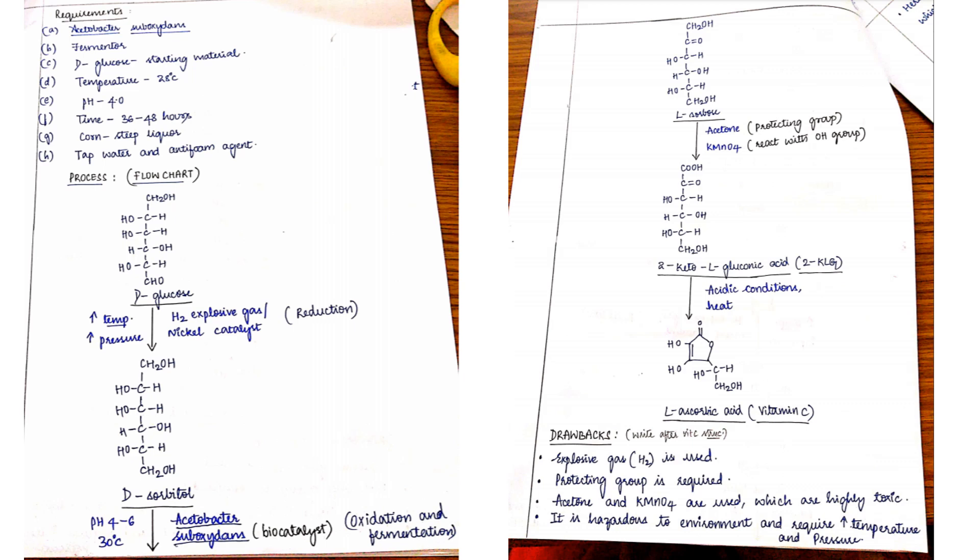The pathway - first you can write the structure of glucose, glucose to sorbitol, sorbitol to sorbose, then acetone to sorbose and with the usage of KMnO4, ultimately it results in 2-keto-L-gluconic acid and you will get a structure called vitamin C.